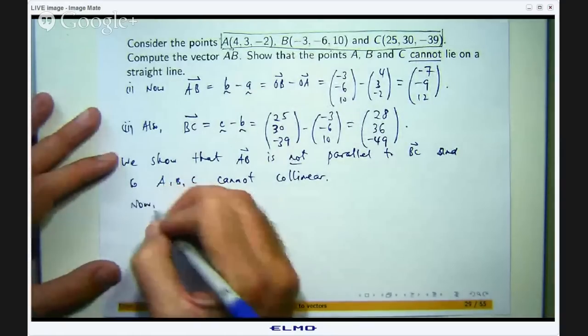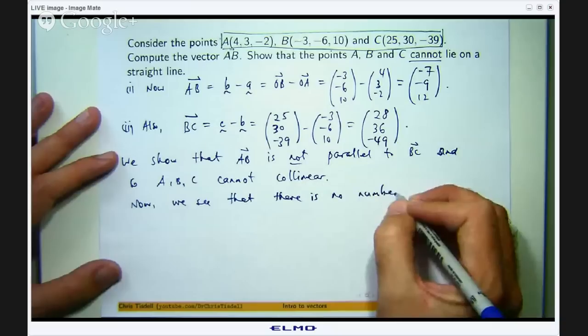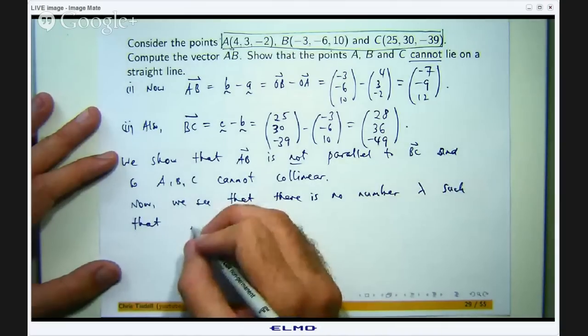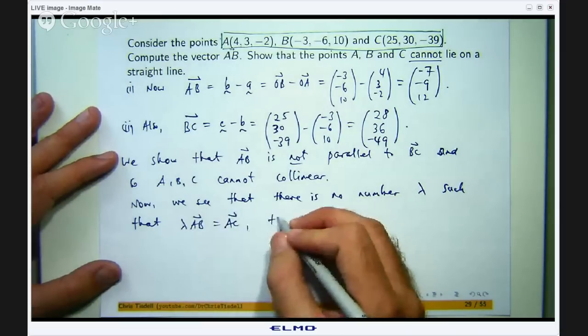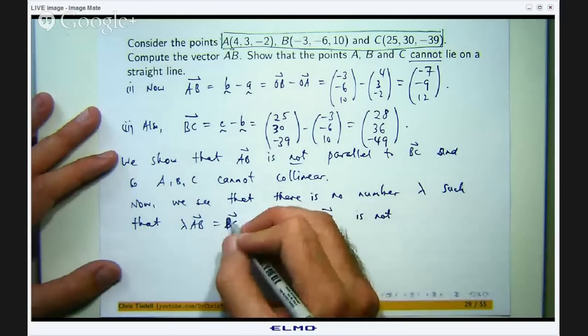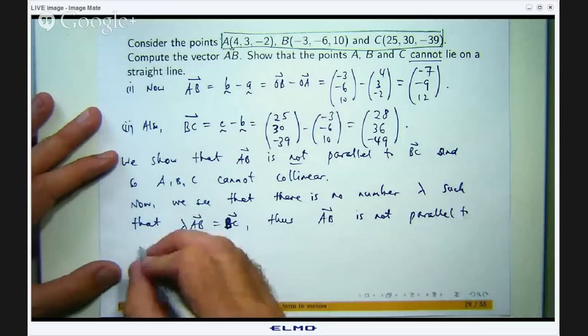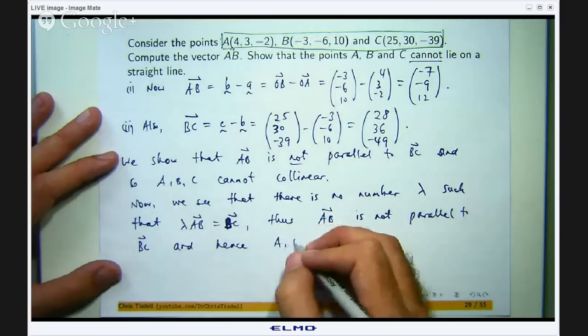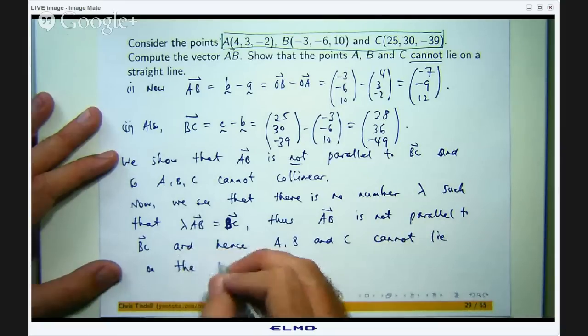So we see that there is no number lambda such that lambda AB equals BC. Thus AB is not parallel to BC and hence A, B and C cannot lie on the same straight line.